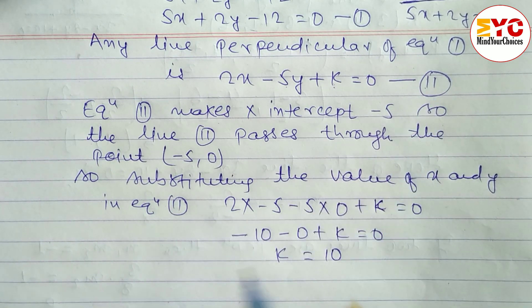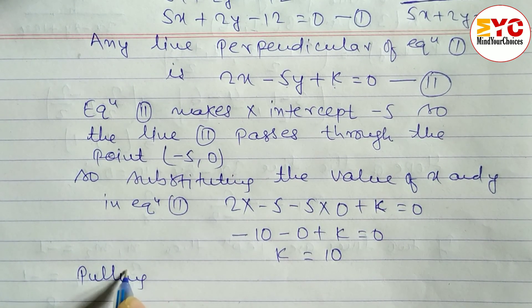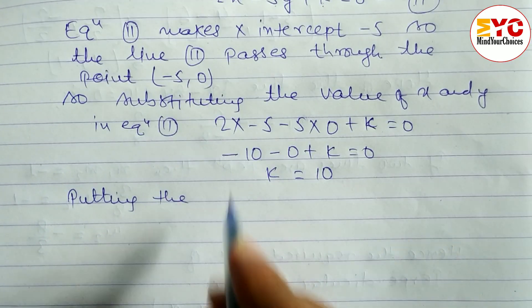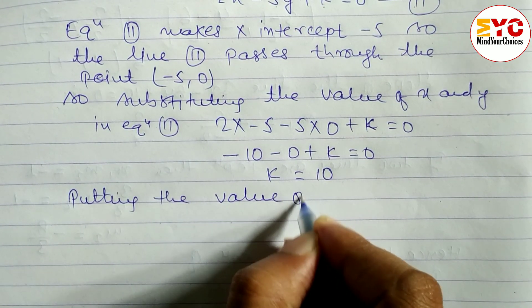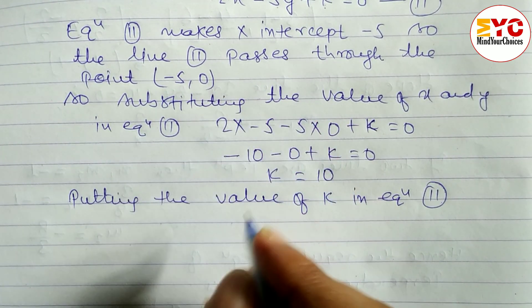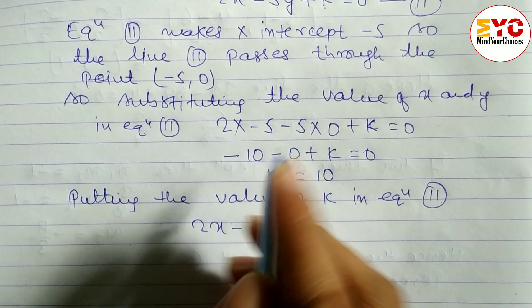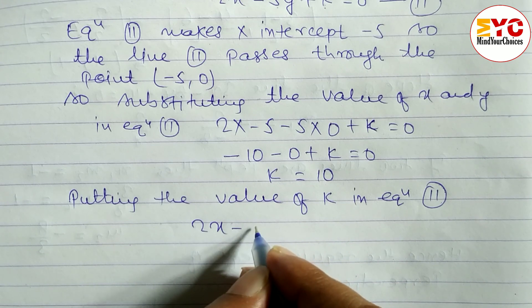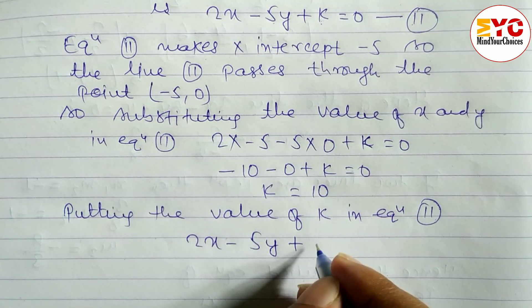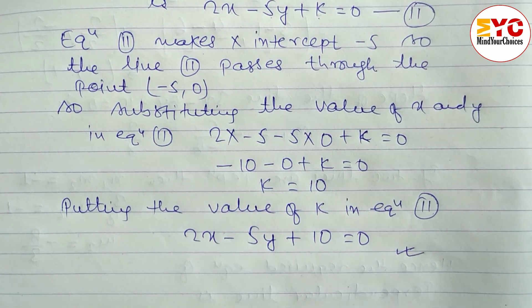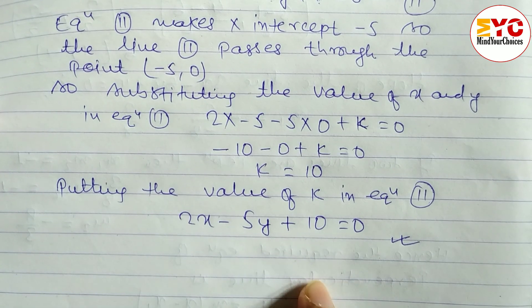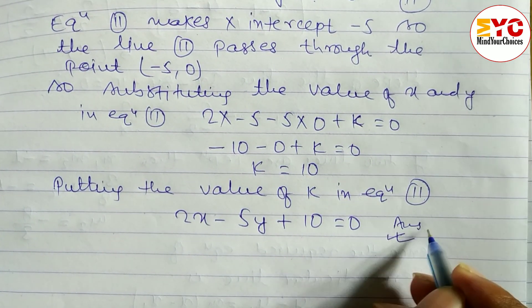Now put the value K = 10 into equation 2. So we get: 2x - 5y + 10 = 0, which is the required equation of a straight line perpendicular to 5x + 2y = 12 and making an X-intercept of -5.